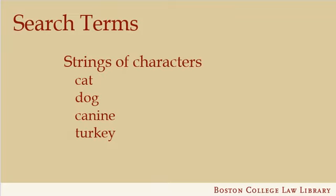In the examples here, it is useful to note that the computer does not know that canine and dog are the same thing, and on the other hand, when the computer sees the letters T-U-R-K-E-Y, it doesn't know if you are talking about an animal or a country.